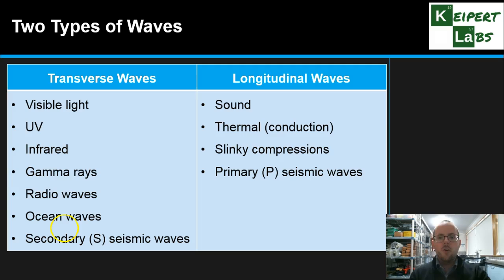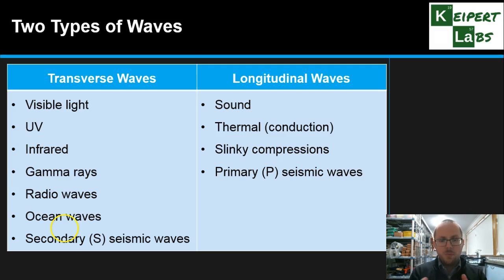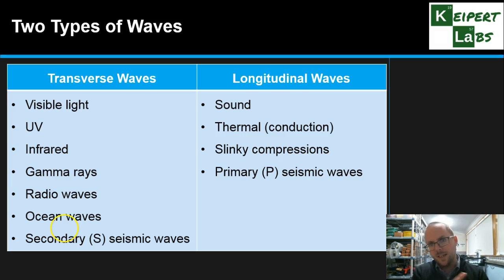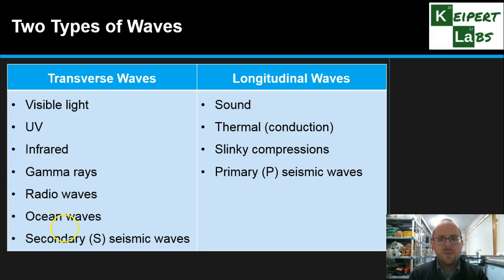For longitudinal waves, we have sound — sound waves involve air particles or the particles of the medium colliding backwards and forwards. We also have thermal energy in conduction, where particles inside a substance vibrate backwards and forwards and collide with the next particle to transfer that vibration, like the slinky compressions we just saw. In earthquakes, primary or P waves are longitudinal waves that travel through the Earth and cause the ground to move in a different way.